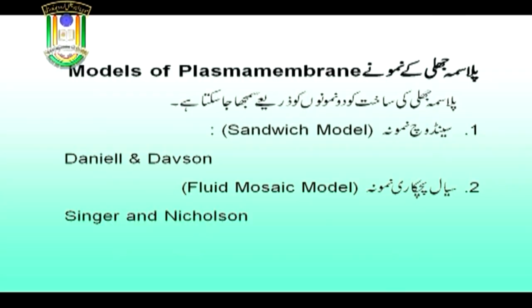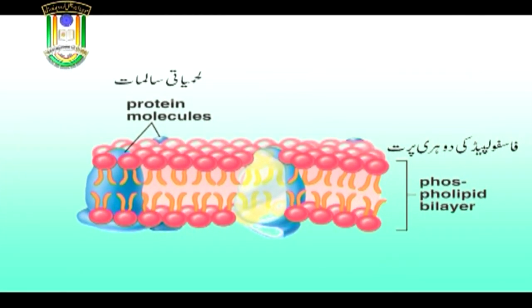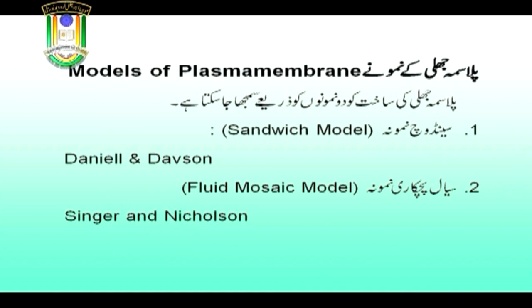پلاسما جھلی کے دو نمونے ہیں: پہلا سینڈویچ نمونہ جس کو ڈینیل اور ڈیوسن نے دریافت کیا، اور دوسرا سیال پچکاری نمونہ جس کو سنگر اور نکولسن نے دریافت کیا۔ سینڈویچ نمونے کے مطابق فاسفولپڈ کے سالمات سینڈویچ کی طرح پروٹین کے سالمات سے بنی دو پرتوں کے درمیان ہوتی ہیں۔ اس طرح کی جھلی کو اکائی جھلی یا یونٹ میمبرین بھی کہتے ہیں۔ روبرٹسن کے مطابق تمام جھلیاں پروٹین-لپڈ-پروٹین ترتیب میں ہوتی ہیں۔